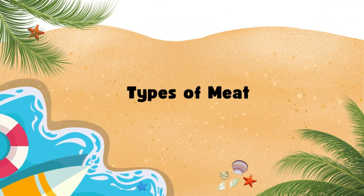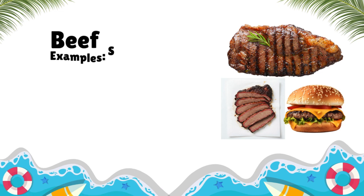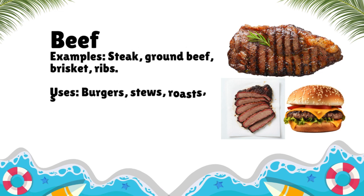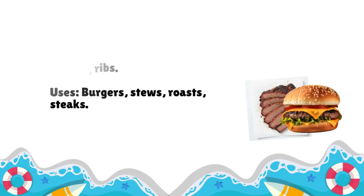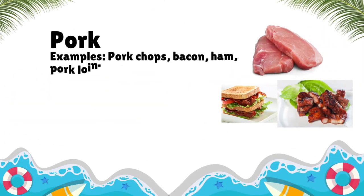Types of meat. Beef — Examples: Steak, ground beef, brisket, ribs. Uses: Burgers, stews, roasts, steaks.